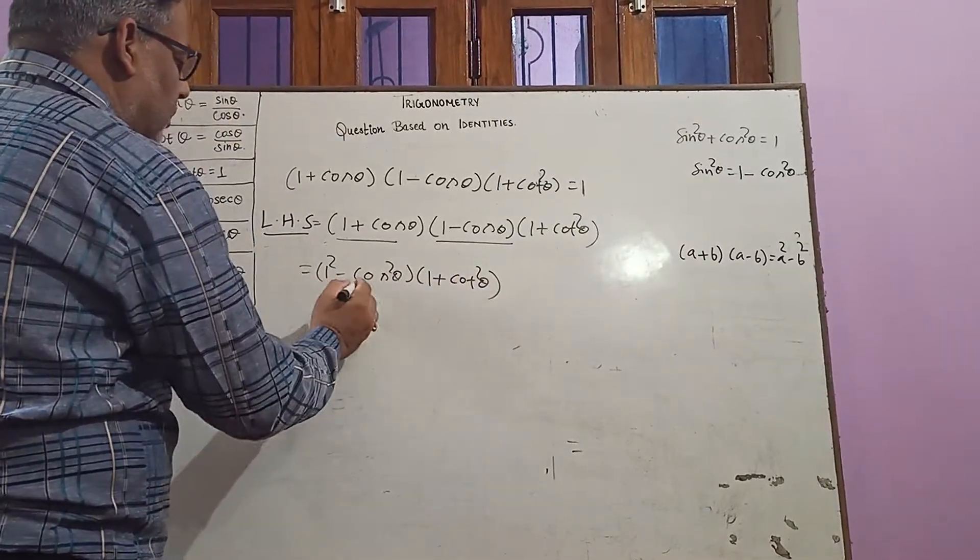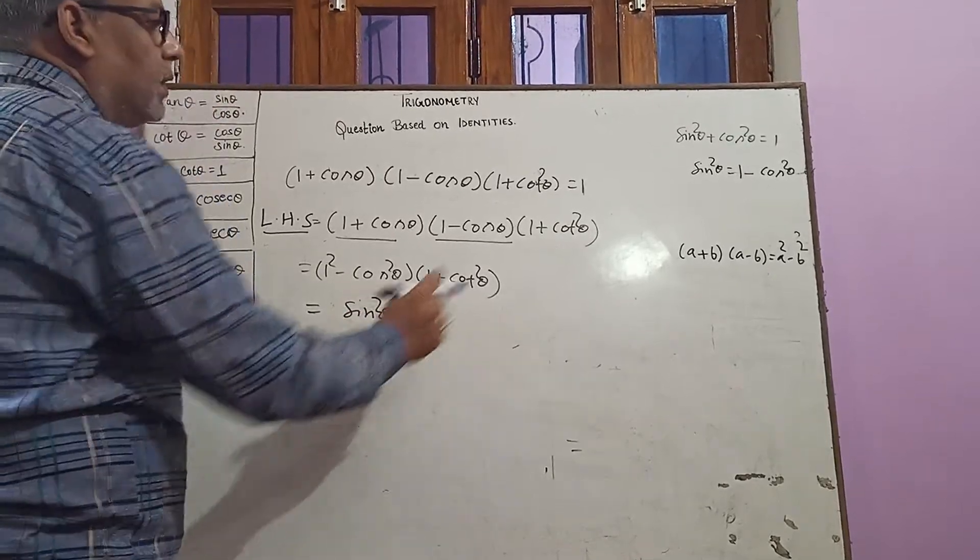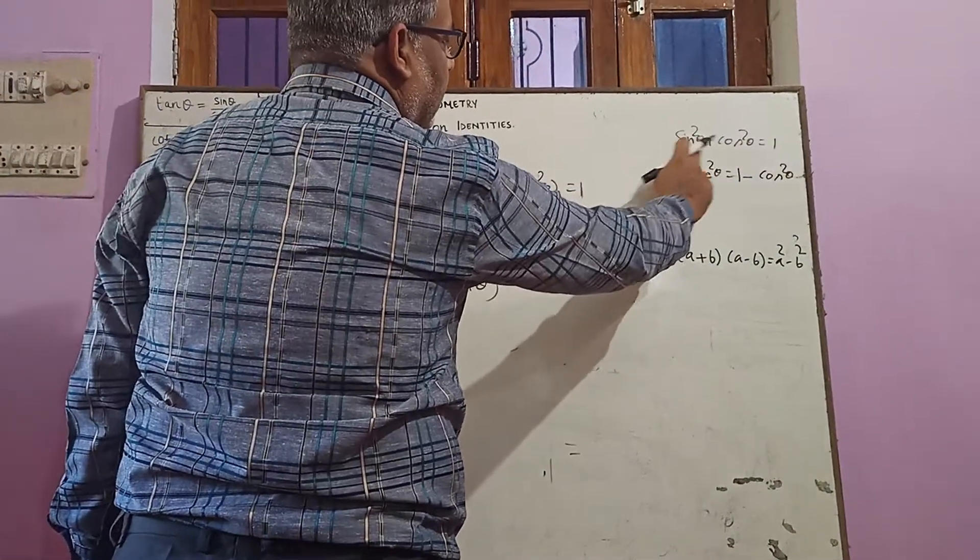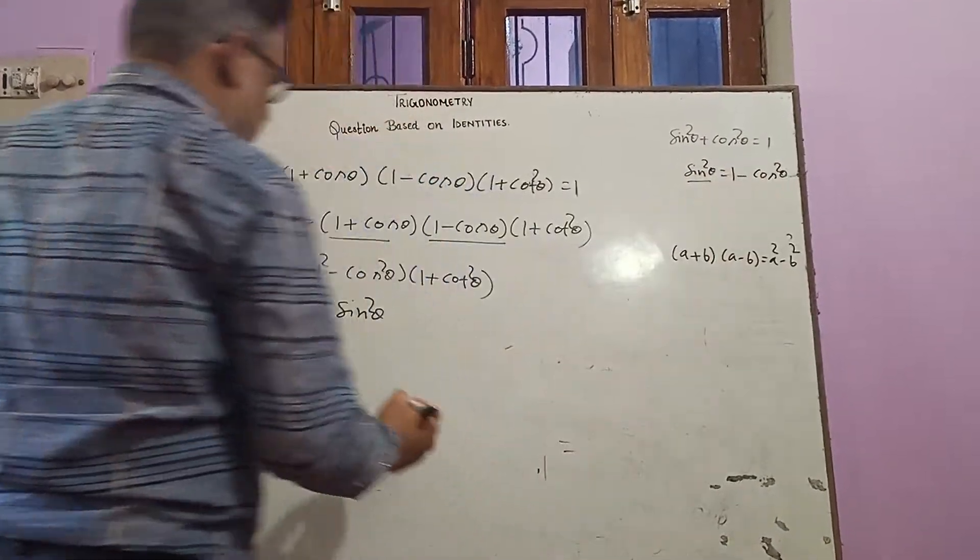So 1 - cos²θ which equals to sin²θ. Here I write this: sin²θ + cos²θ = 1 and sin²θ = 1 - cos²θ.